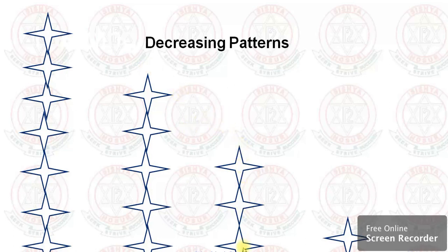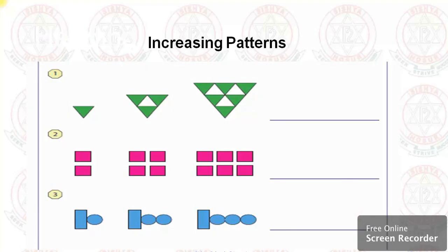It became three, then again two stars reduced and it became one. So this is called a decreasing pattern — it will be decreasing one step at a time. Now let's see some worksheet examples.